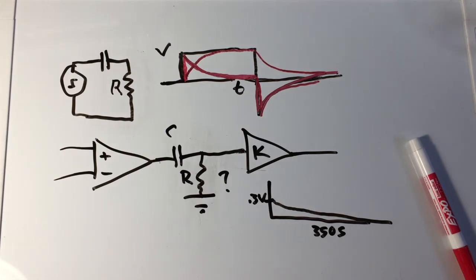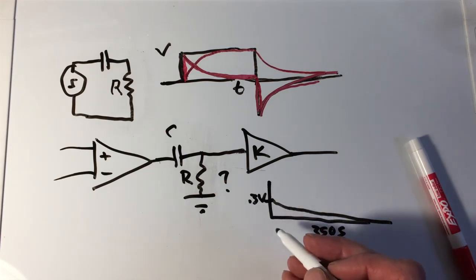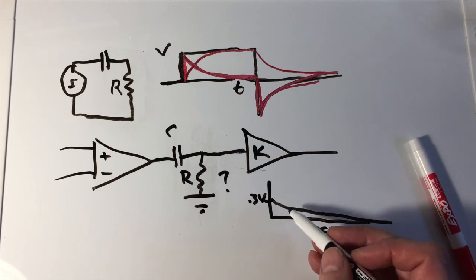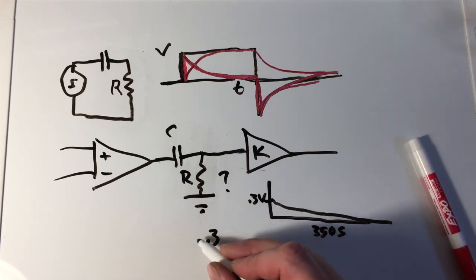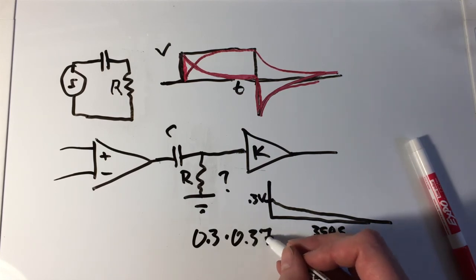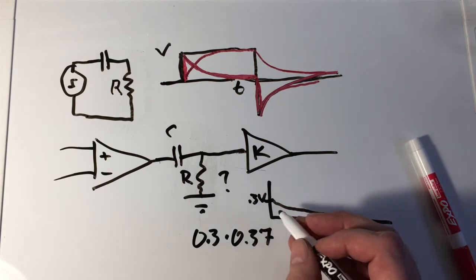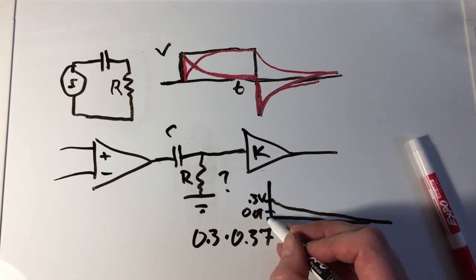And we could do that by saying that 0.3 volts is our initial condition. And then what's the time constant? Well, we know that we should be at 0.37 of our initial value. So if we take 0.3 volts times 0.37, it's going to be somewhere around 0.09 volts. So 3 times 3.